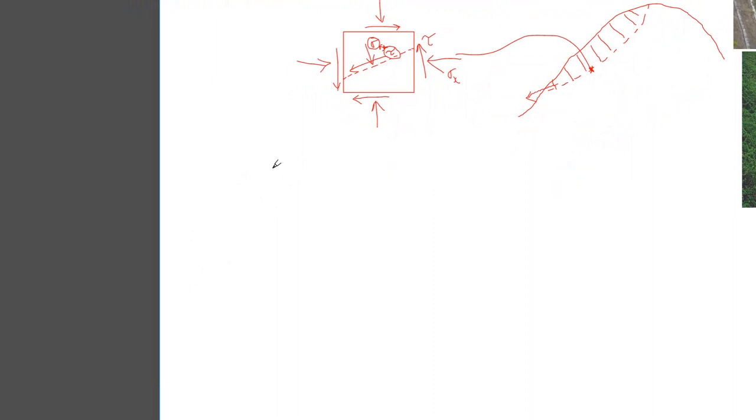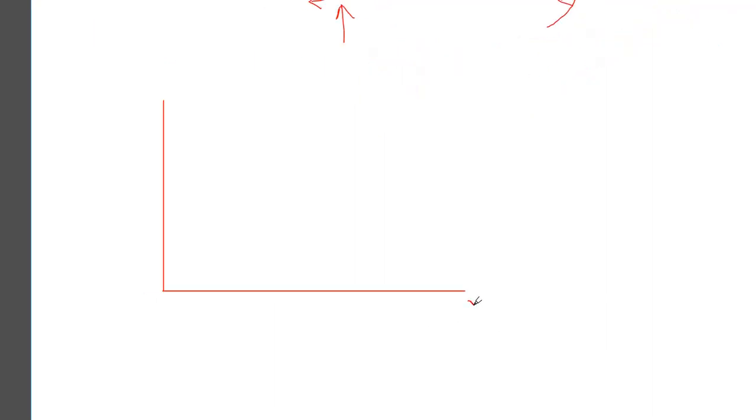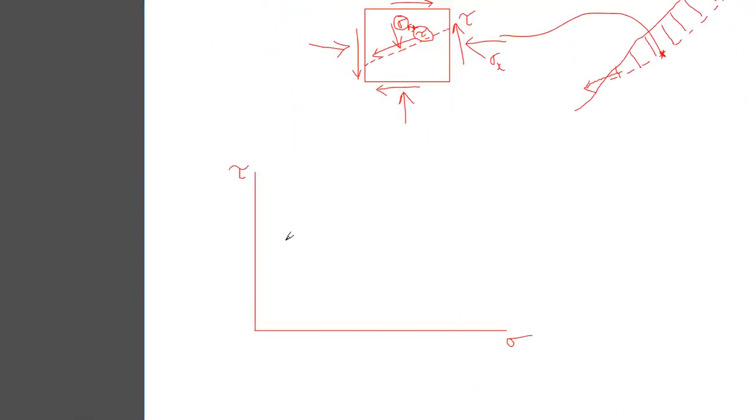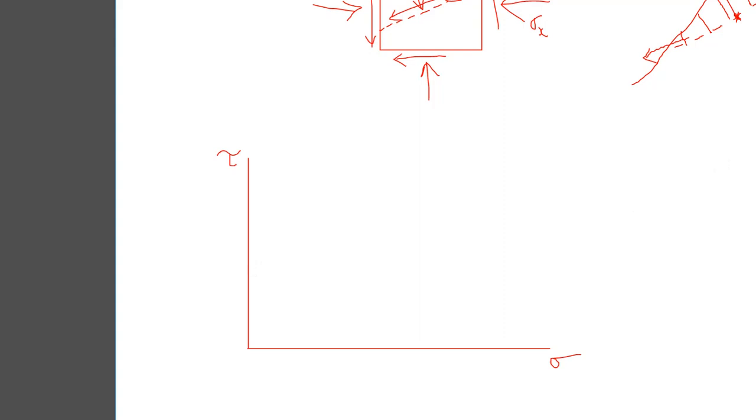Well, if I was to plot it where my x-axis is sigma and my y-axis is tau, if I was to plot the relationship between them, you'd see that it looks like a straight line, something like this.